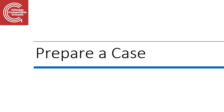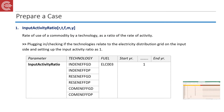Now let's plug in the numbers in our actual OSeMOSYS interface. The first parameter we will be working with is the Input Activity Ratio. The Input Activity Ratio is a function of region, technology, fuel or commodity, mode of operations, and years. In this exercise, you have to check the connectivity of the commodity and technology relationship and verify that the numbers are correctly plugged into your model.